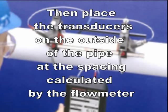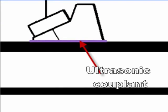We then place the transducers on the outside of the pipe at the spacing calculated by the flow meter. We also need to place an ultrasonic couplant between the transducers and the pipe, because an air gap will stop the ultrasonic signal.